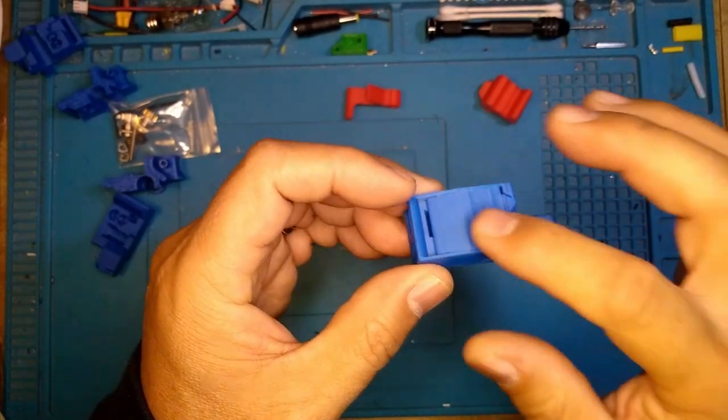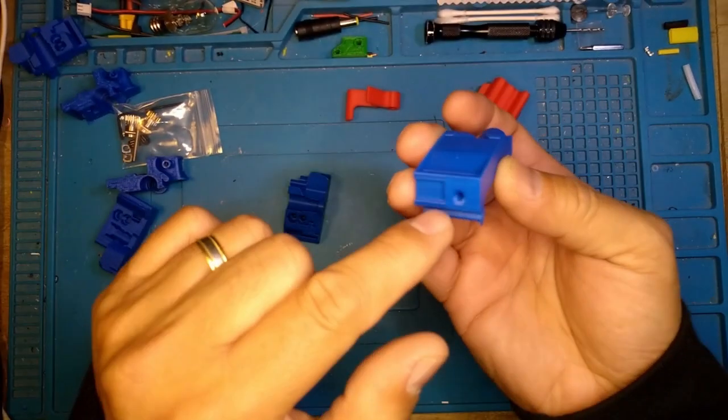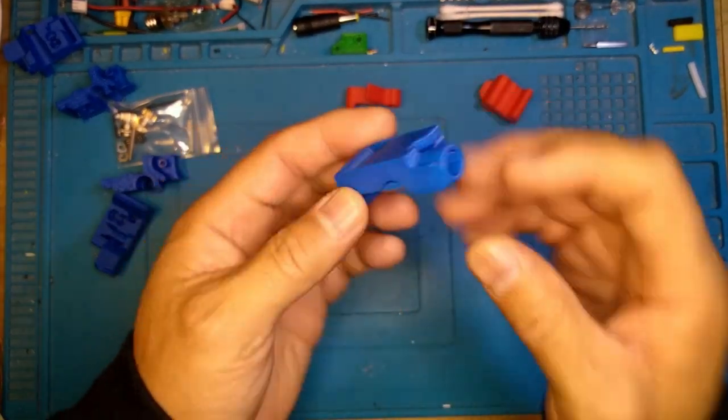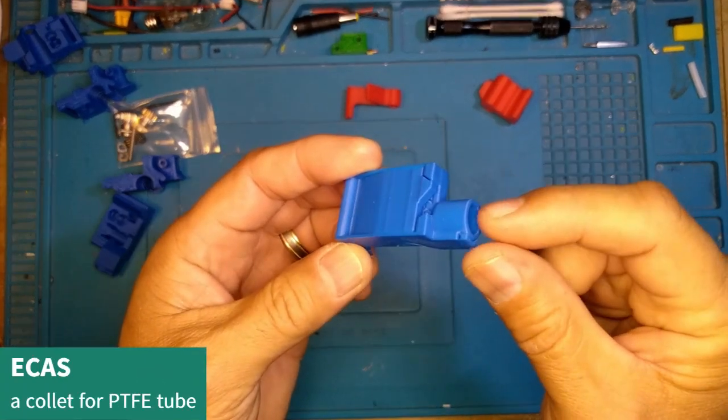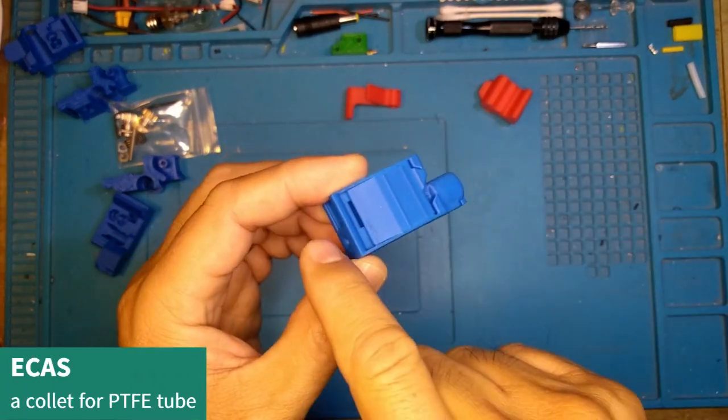We're going to start with the top part. Top part is the filament path. The filament goes through this little hole here. There's an ECAS collet which goes into here and it passes through.